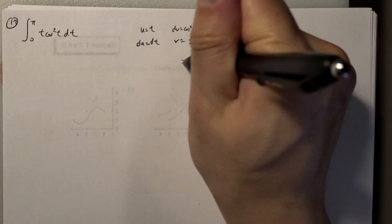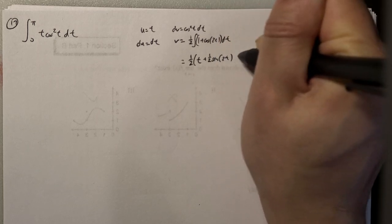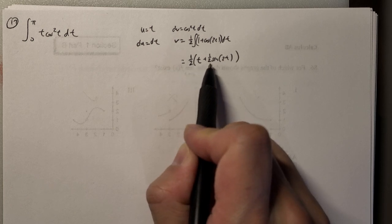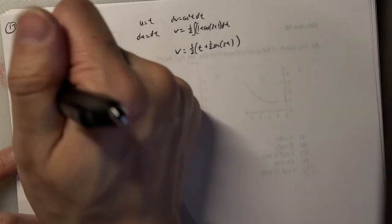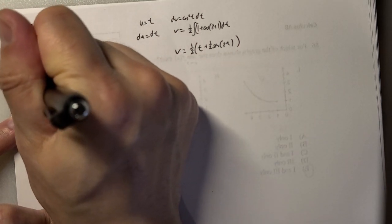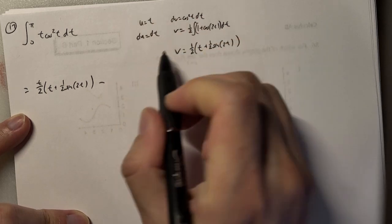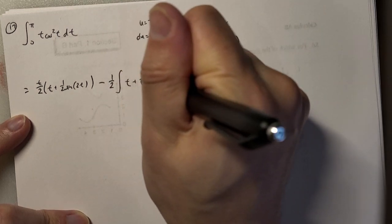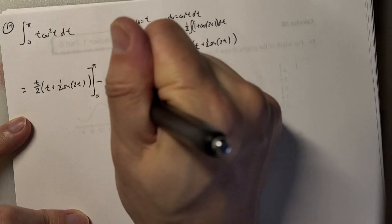Let's find v. It's ½ times (t + ½ sin(2t)). Technically there's a plus c, but for integration by parts we can omit it. So v = ½(t + ½ sin(2t)). Now let's do integration by parts: uv minus ∫v du. This gives t/2 · (t + ½ sin(2t)) minus ½ ∫(t + ½ sin(2t)) dt. This is a definite integral, so both terms are evaluated from 0 to π.